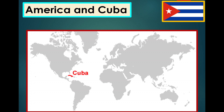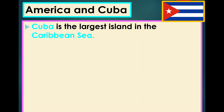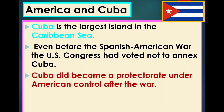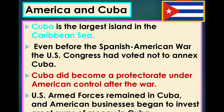Here's Cuba — it's an island about 90 miles off the coast of Florida and is the largest island in the Caribbean Sea. Even before the Spanish-American War, the United States chose not to annex Cuba. Cuba becomes a protectorate until the passage of the Teller Amendment in 1930, and the United States starts to control this area for the purposes of an exploitative economic relationship.